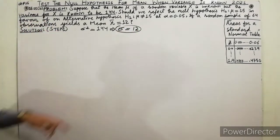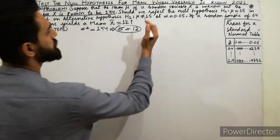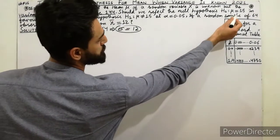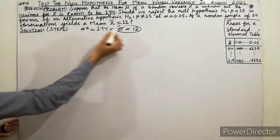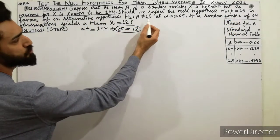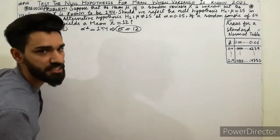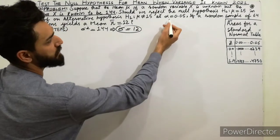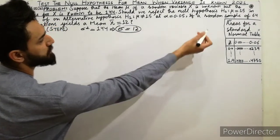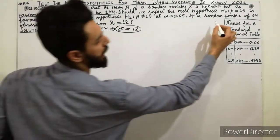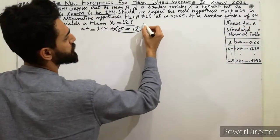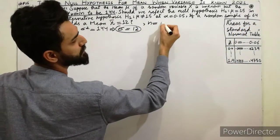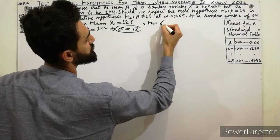The next step: should we reject the null hypothesis that mu equals 45? The alternative hypothesis is mu does not equal 45, which is a two-tailed test. Alpha is 0.05 and we have a random sample of n equal to 64.